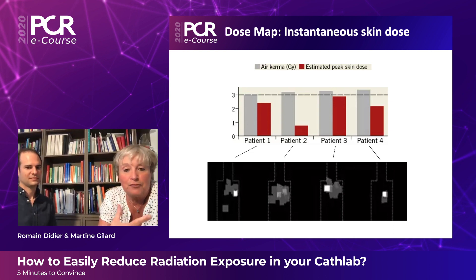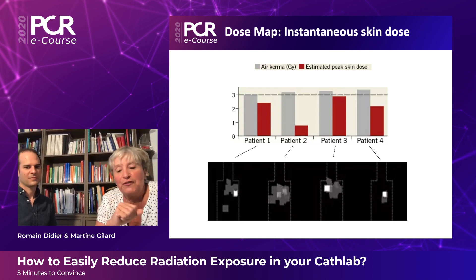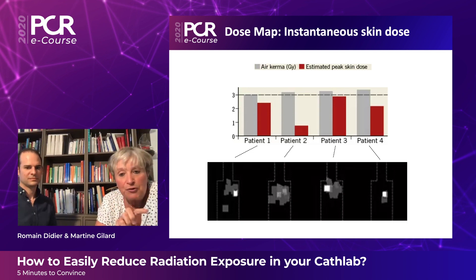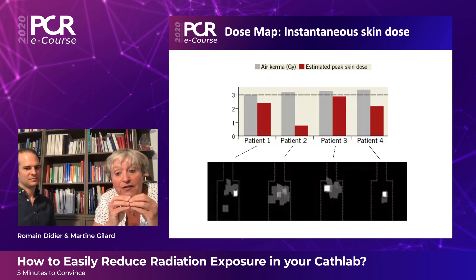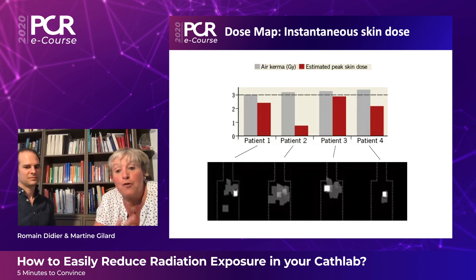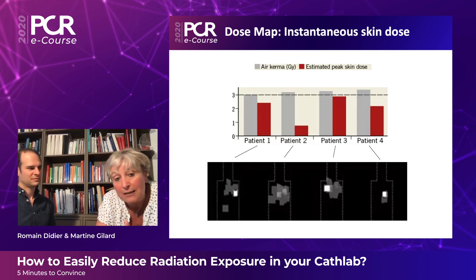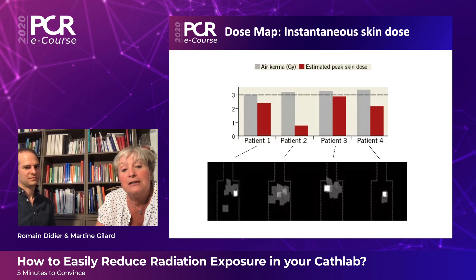It is designed to provide the user with a visualization of the distribution of skin dose throughout the procedure. For example, we show four patients with the same DAP. Patient two has a very moderate skin dose because it is diffused over a large area, while for patient four, the dose is much higher because it is concentrated on a small area — probably due to working for a long time with the same incidence. With the dose map, we can modify the incidence when the procedure is long, based on this information.